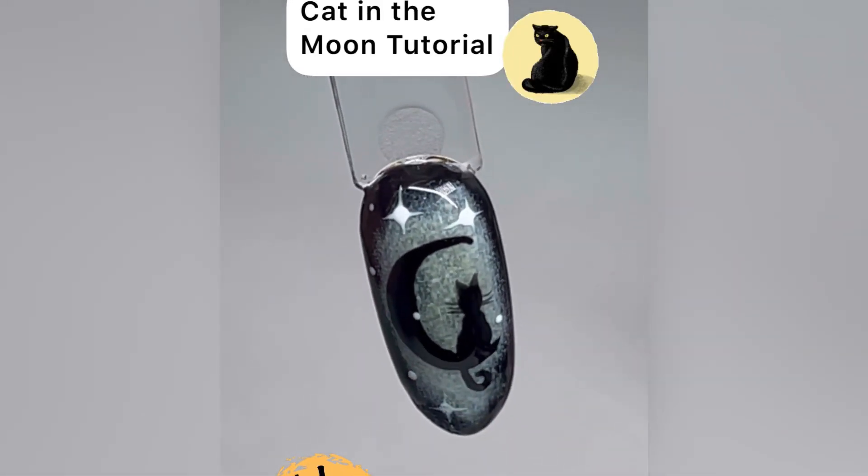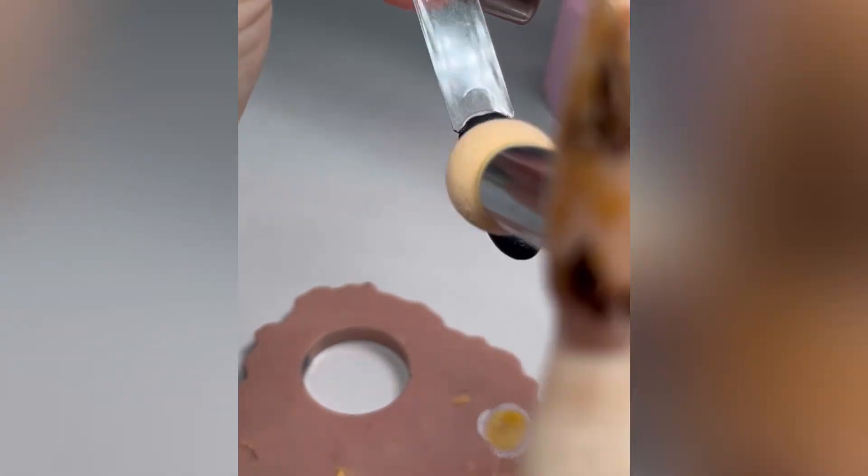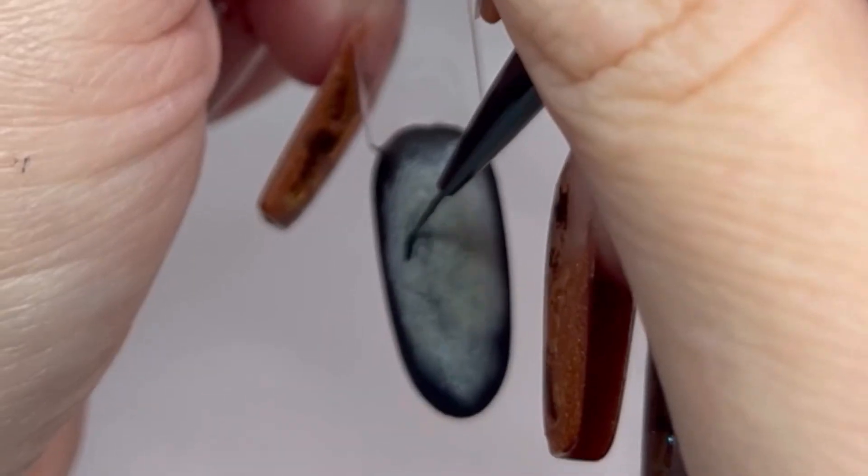Cat in the Moon tutorial. You're going to start off with a white base and then you're going to go over with some yellow. I'm just using a little stamping tool there.